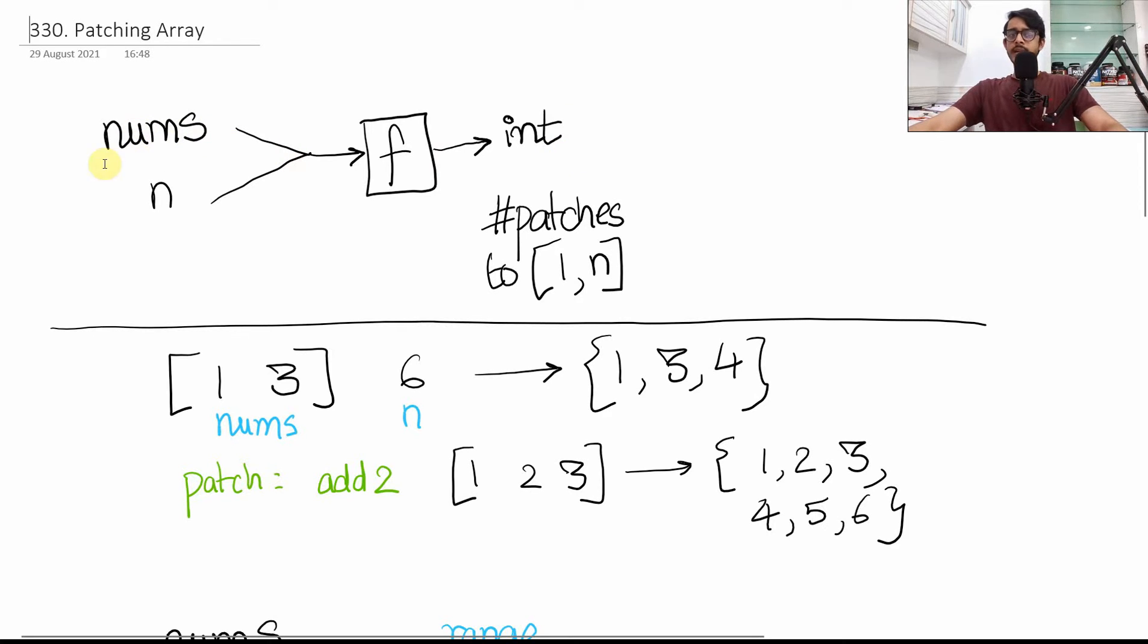First let's discuss the input and output. Given a list nums which is a list of integers and you're given another integer n, the goal is to design a function that returns an int at the end. This int represents the number of patches. You have to somehow modify or look at the nums list in such a way that you can generate this range of values from one to n.